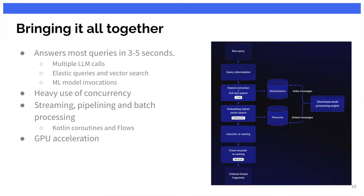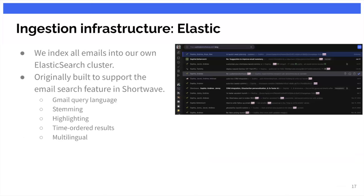I haven't talked much about the right-hand side of the image — where all the indexing and ingestion work happens. To run the pipeline you first need infrastructure where you ingest and index all this information beforehand. Like I said, we've been using Elasticsearch for several years — it powers our email search functionality. If you go to the UI and do a search, say for emails from Sophia with the word "blog," we support Gmail's query language in our app as well, so you can use operators like "from." It's all powered by Elasticsearch.